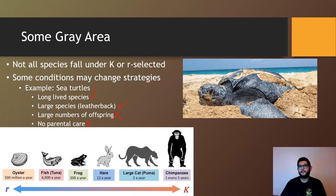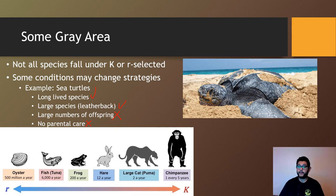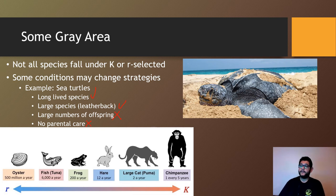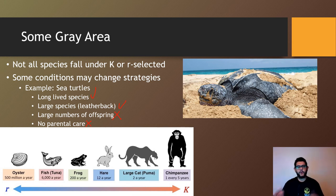Don't think of it as always R or always K — there may be a gradient. Hares tend to have about 12 offspring a year, frogs can have 200, and oysters can have 5 million offspring in a year. On the extreme K end, large pumas, cats, or chimpanzees may have a baby every couple of years to every five years. On a free response or multiple choice question they'll likely ask about one or the other, but just know that some species fall in a gray area.